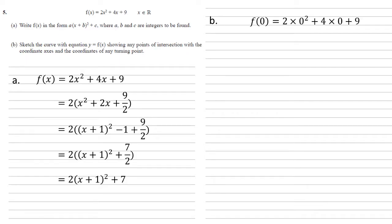We can use either the original equation or the new one. I've gone with the original because it's easier to use. f(0) = 2(0)² + 4(0) + 9 = 9. So it's going to cross the y-axis at 9.